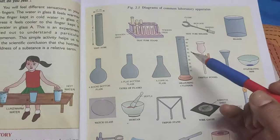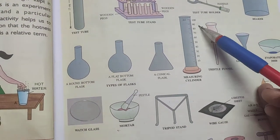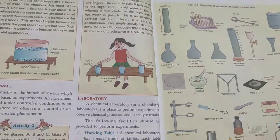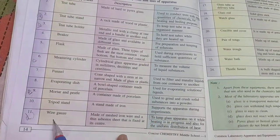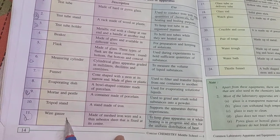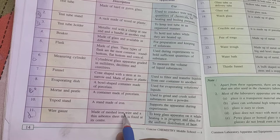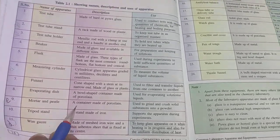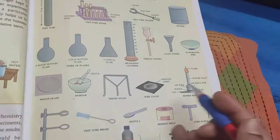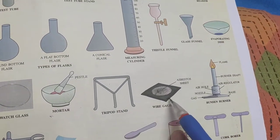Wire gauge is made up of meshed iron wire and a thin asbestos sheet that is fixed at the center. Here look at the fixed wire gauge. This is metal and asbestos sheet.